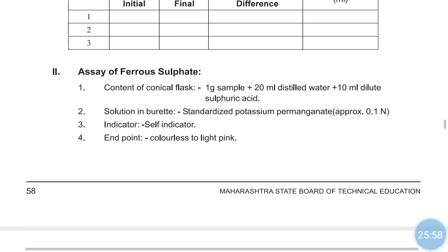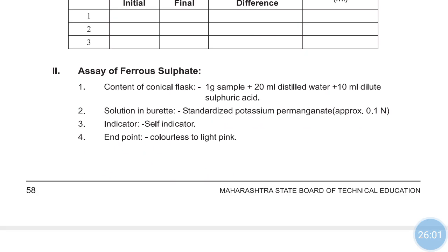For the assay of ferrous sulfate observations: in the conical flask take 1 gram of sample, 20 ml of distilled water, and 10 ml of dilute H2SO4. In the burette take KMnO4, approximately 0.1 normal. The indicator is KMnO4 as self-indicator. The end point is colorless to light pink.